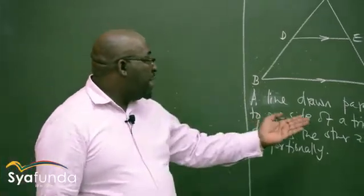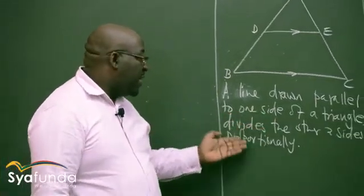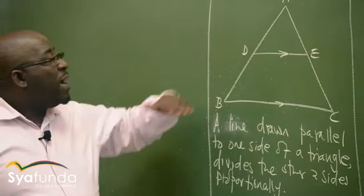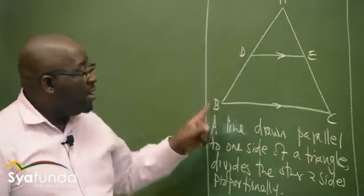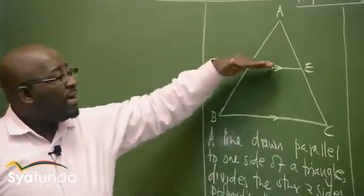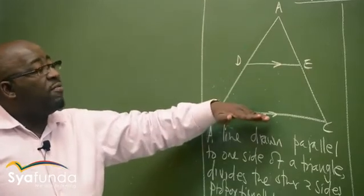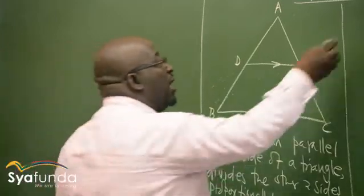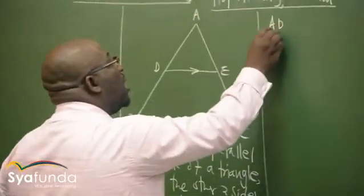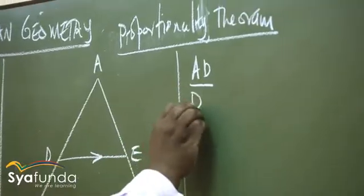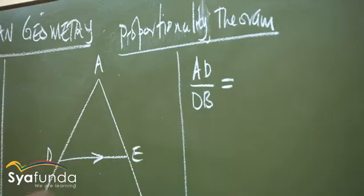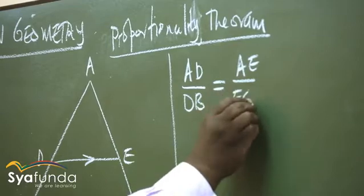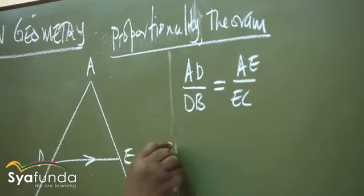This theorem says a line drawn parallel to one side of a triangle divides the other two sides proportionally. We need to understand what that means. When we have a line drawn parallel to one side of a triangle — it has three sides — once you draw one line parallel to one side of a triangle, it would divide the other two sides proportionally. In other words, this theorem says AD over DB is the same as AE over EC.